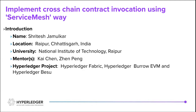I am working on the project: Implement Cross-Chain Contract Invocation using service mesh. In this project, I have used Hyperledger Fabric, Hyperledger Burrow EVM, and Hyperledger Besu.